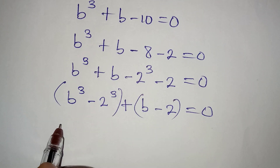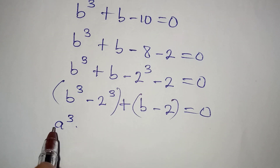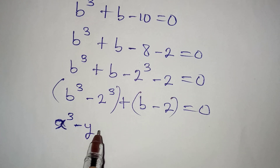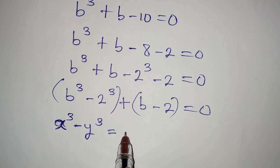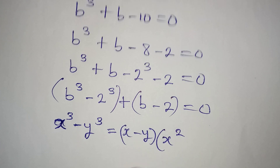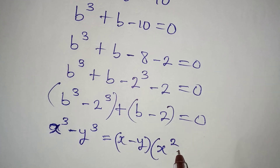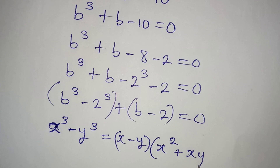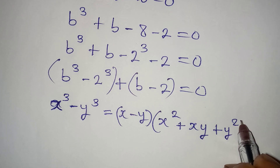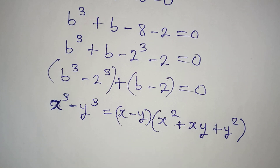To deal with the cubic difference, we follow the standard: x to the power of 3 minus y to the power of 3 equals x minus y, times the bracket x squared plus xy plus y squared. This is just for the first term here.